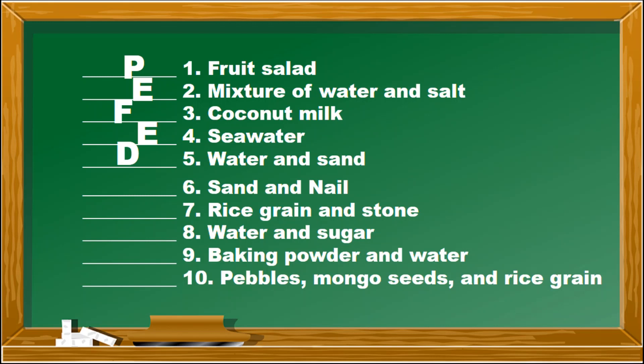Number six, sand and nail — of course, nail is a metal, so we are going to use magnet. M for magnet. Number seven, rice grain and stone — the answer is picking. P for picking. In the mixture of rice grain and stone, you can pick out the stones since they are bigger than the rice grain, so the answer is picking. Use your hands by means of picking to separate this mixture.